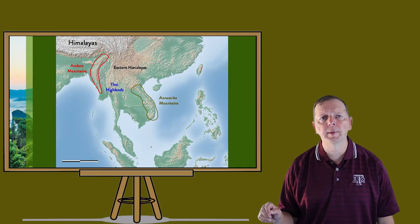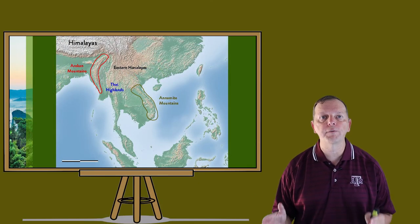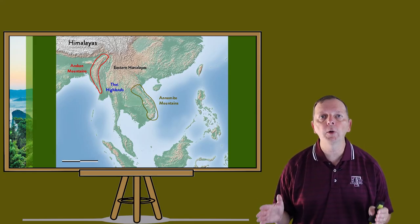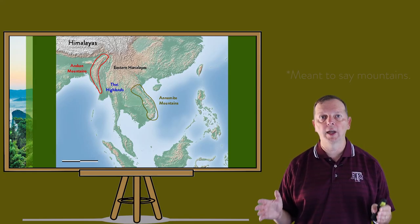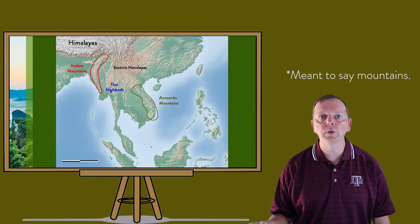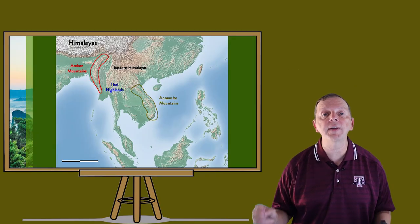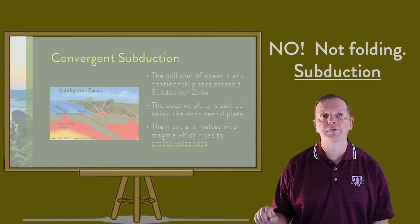Running down the Indochinese peninsula are the Annamite Mountains, which are found in Laos and Vietnam. Just like the Himalayas, each of these mountain chains were formed through convergent folding. But the mainland peninsulas are not the only part of Southeast Asia with mountains — the islands of Indonesia and the Philippines also have mountains. In fact, Indonesia's mountains can reach as high as over 16,000 feet. But unlike the mainland's mountains, which were formed by convergent folding, these mountains — actually the islands themselves — were formed by convergent subduction.